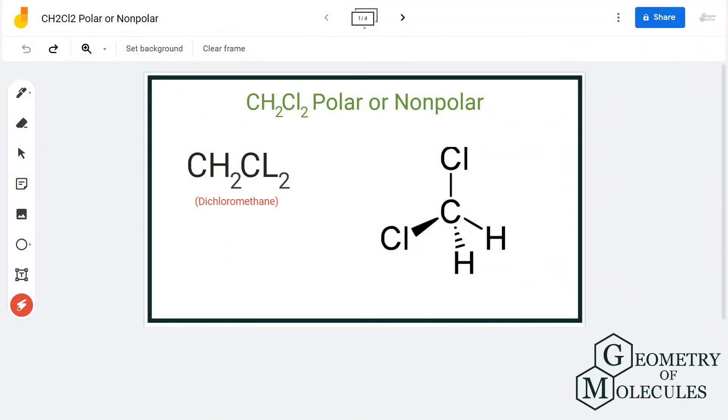Hi guys, today in this video we are going to determine the polarity for CH2Cl2 molecule. It's the chemical formula for dichloromethane. To understand its polarity, we will first look at its Lewis structure followed by its shape.